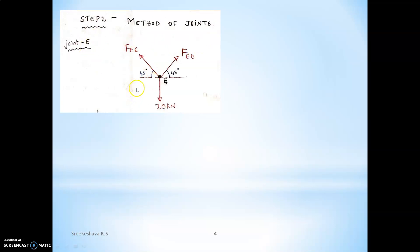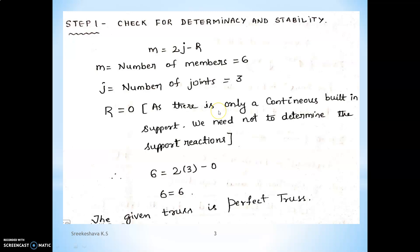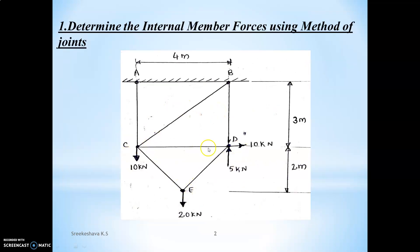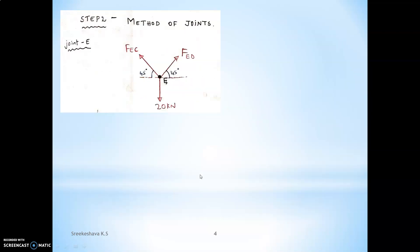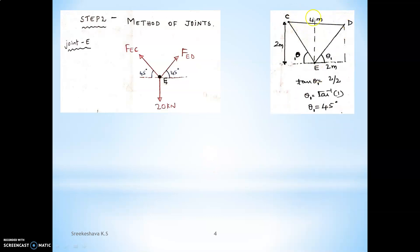Consider joint E. Unknown members are assumed to be in tension — with respect to the joint, the force is acting away. The inclination angle is 45°. Consider triangle C, D, E: the height is 2 meters. Since E is exactly at mid-span, the horizontal distance is also 2 meters. Therefore tan theta equals 2 by 2, giving theta equals 45 degrees. Both angles theta are 45 degrees.